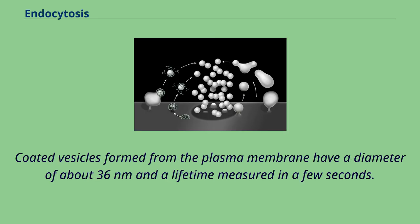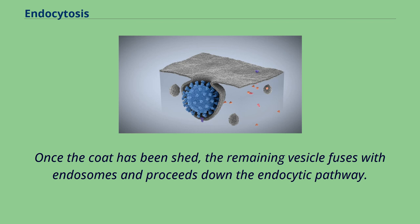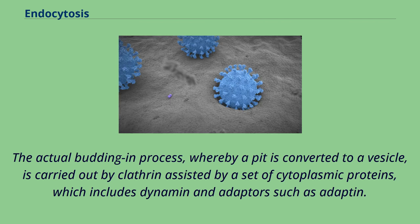Coated vesicles formed from the plasma membrane have a diameter of about 36 nanometers and a lifetime measured in a few seconds. Once the coat has been shed, the remaining vesicle fuses with endosomes and proceeds down the endocytic pathway. The actual budding-in process, whereby a pit is converted to a vesicle, is carried out by clathrin assisted by a set of cytoplasmic proteins, which includes dynamin and adapters such as adaptin.